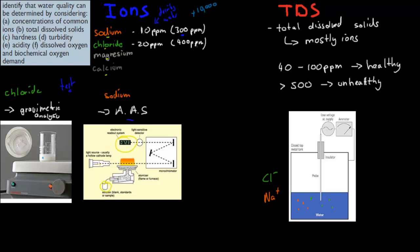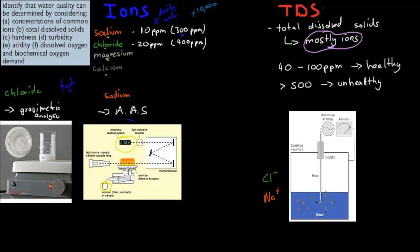The next factor is TDS, or total dissolved solids. These are basically dissolved solids within a water sample — they are usually mostly ions. You can imagine that if most of the water consists of dissolved ions, that might not be super healthy. We try to keep dissolved solids to a limit of about 40 to 100 parts per million for healthy drinking water. If it gets to more than 500 parts per million, it can become unhealthy.